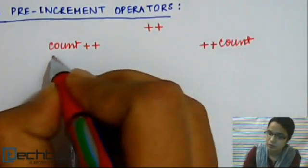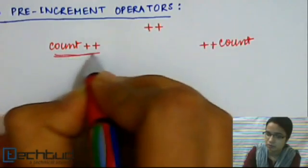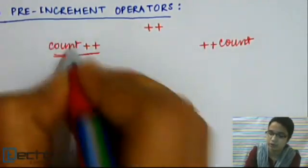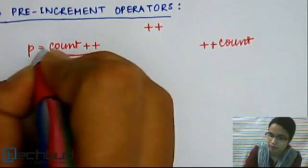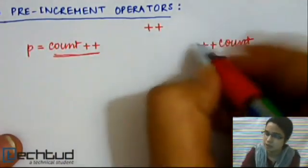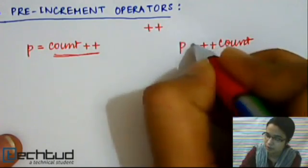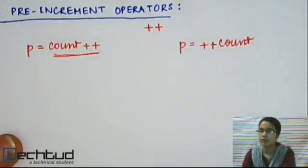This will increment the value of your variable COUNT by one and you assign it to some other variable P. Similarly, if you assign it to another variable P, what will happen?